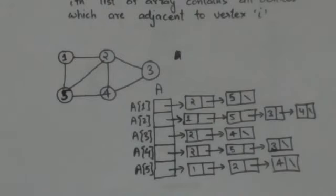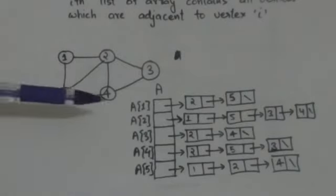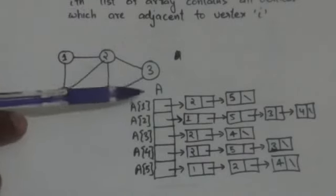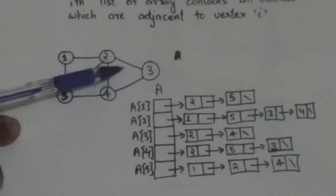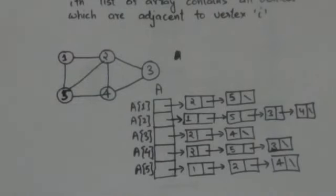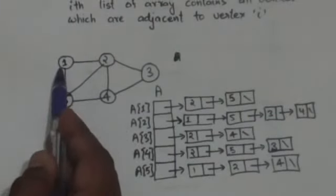Consider this undirected graph. We have to represent this graph by adjacency list representation. Since this graph has only five vertices, in adjacency list representation this graph will be represented by an array of five lists. Let this graph be represented by array A, so the size of array A will be 5.